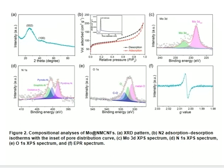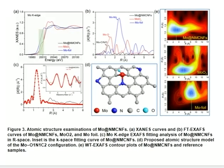Panel B is the nitrogen adsorption/desorption isotherm with the insert showing the pore size distribution curve, and panel C is the Mo 3d XPS spectrum. Panel D is the nitrogen 1s XPS spectrum, panel E is the oxygen 1s XPS spectrum, and panel F is the EPD spectrum.